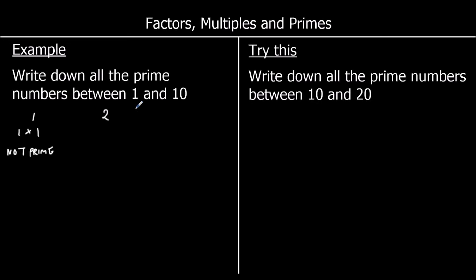The number 2 is only 1 times 2, so it's got two factors: 1 and 2. So 2 is a prime number. And 3 again is only 1 times 3 — there are no other numbers that multiply to make 3. So 3 is also prime.